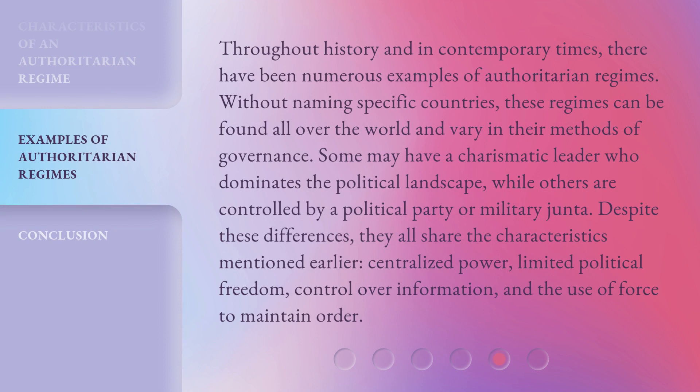Throughout history and in contemporary times, there have been numerous examples of authoritarian regimes. Without naming specific countries, these regimes can be found all over the world and vary in their methods of governance. Some may have a charismatic leader who dominates the political landscape, while others are controlled by a political party or military junta. Despite these differences, they all share the characteristics mentioned earlier: centralized power, limited political freedom, control over information, and the use of force to maintain order.